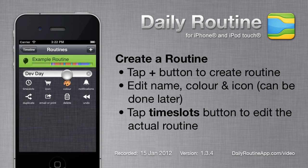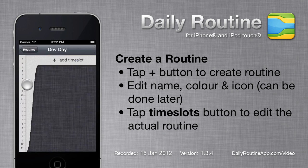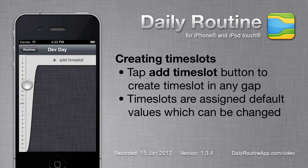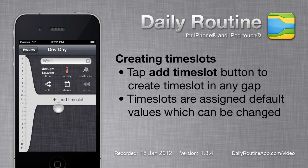Normally I'd change the icon and colour, but that can be done any time. So let's tap the Timeslots button to begin the real work of creating our new routine. Routines start with a single 24-hour gap timeslot. Tap the Add Timeslot button to create a new timeslot in this gap.